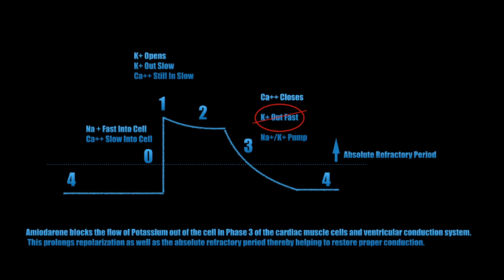the potassium channel is primarily involved in phase three, which is repolarization. So if we can block that channel, we can slow down repolarization and extend the absolute refractory period of the cells. This in turn will hopefully help us to restore a more optimal cardiac rhythm.